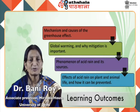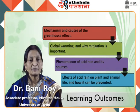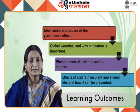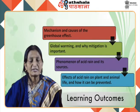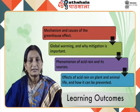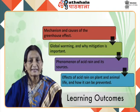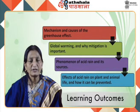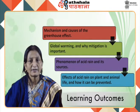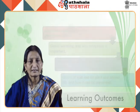After studying this module, you will learn about the mechanism and causes of the greenhouse effect, know about global warming and why mitigation is important, learn about the phenomenon of acid rain and its sources, and know the effects of acid rain on plant and animal life and how it can be prevented.